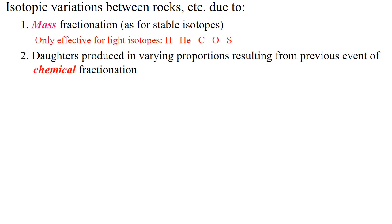Second is chemical variation. This is a result of changing chemical conditions and therefore changing radiogenic isotopic ratios. In magmatic systems, adding more of the daughter product isotope or the stable isotope from a system can change the isotope ratio accordingly, allowing for the distinction between different magmatic processes.